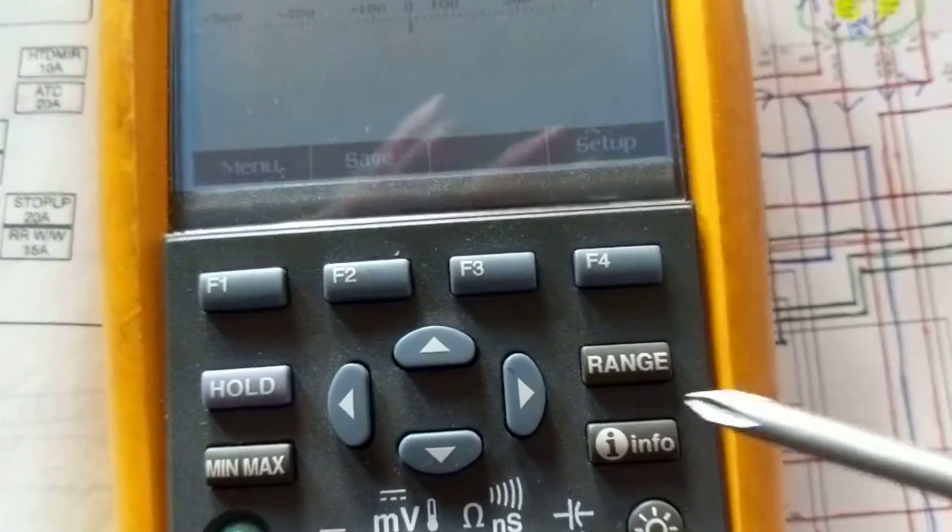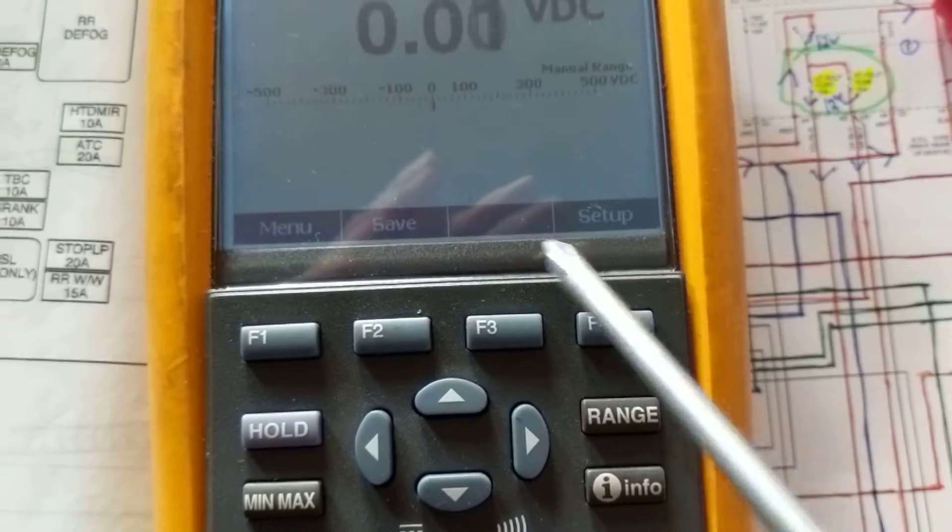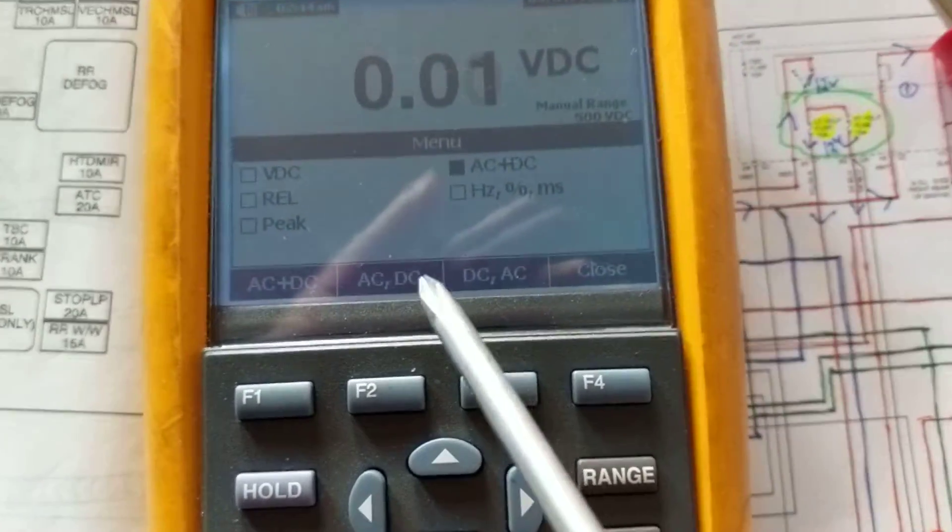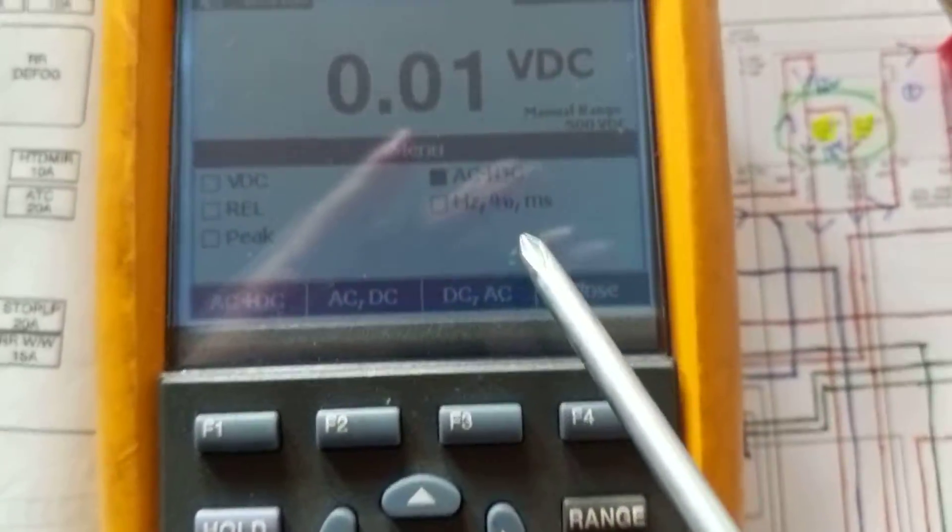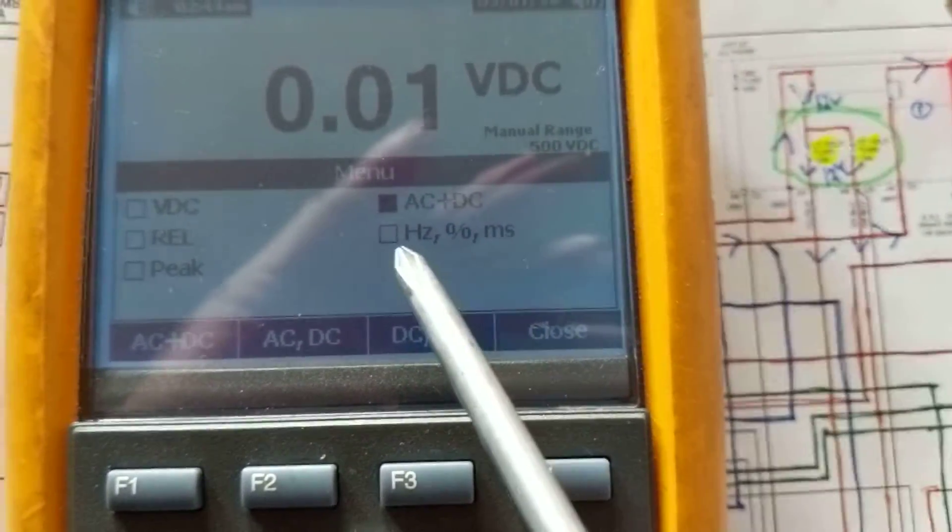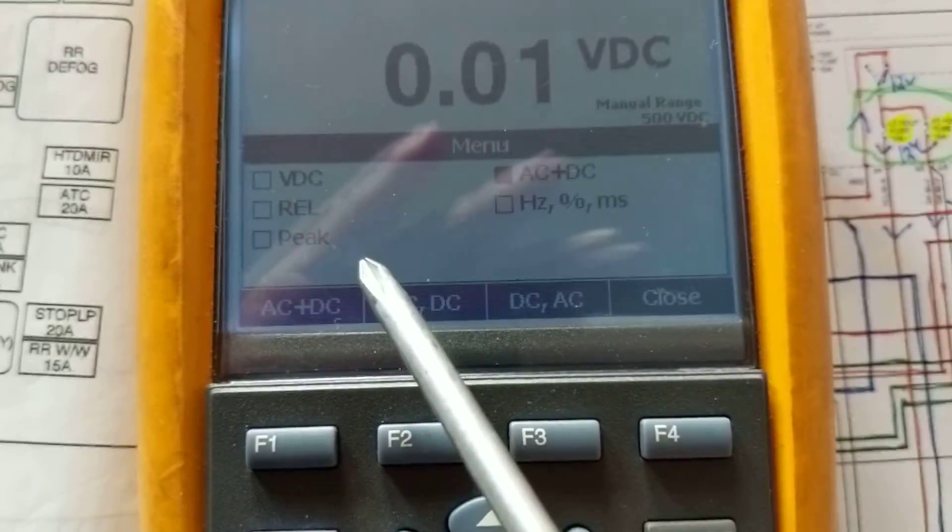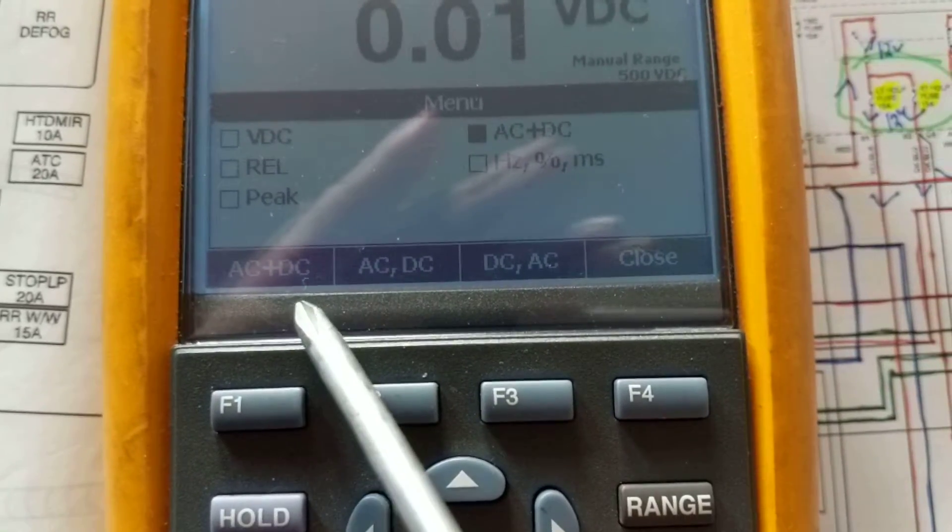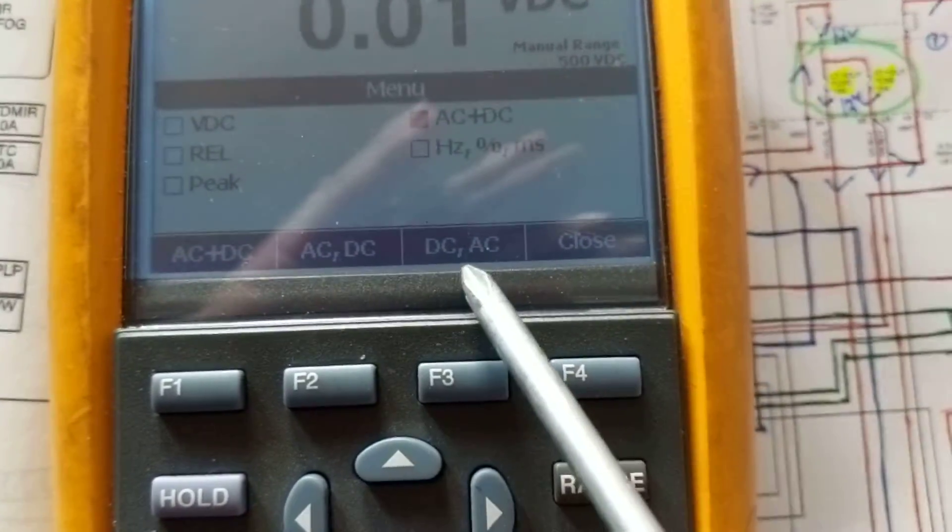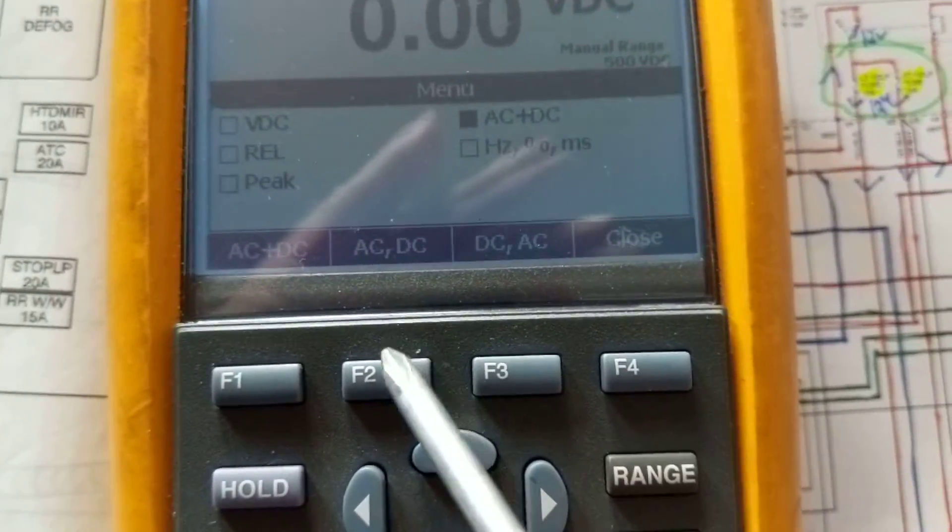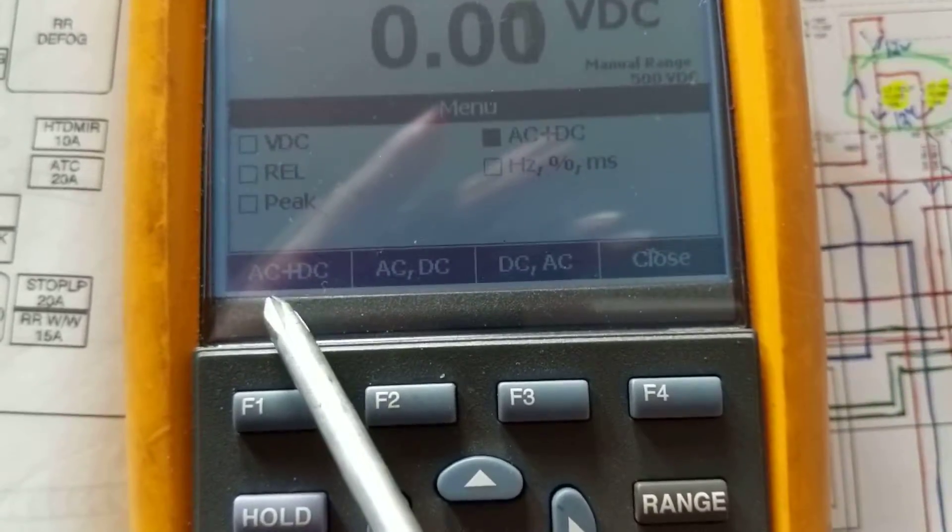Other thing is if you see over here: menu, save, and all these things, setup. It lets you - sometimes you have AC plus DC. These are what you are able to choose. If you choose this, you'll be choosing this one.